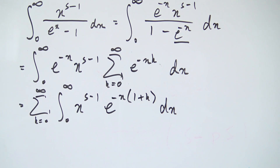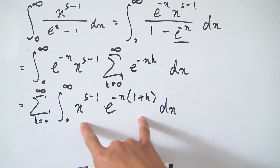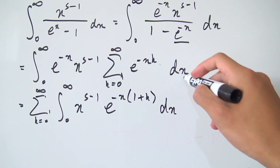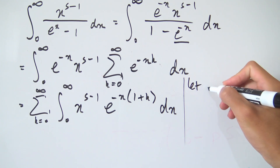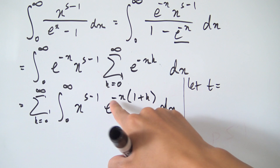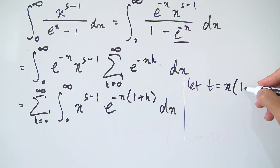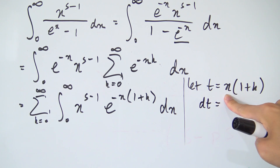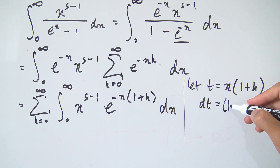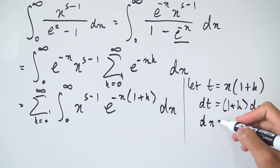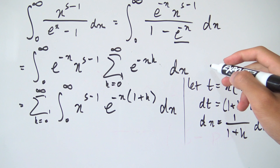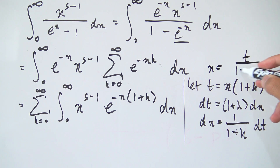If you know integral representations of specific functions, this looks like the gamma function, except we have this x times 1 plus k part that's complicating things. So we introduce a substitution: let t equal x times 1 plus k. Differentiating both sides gives dt equals 1 plus k times dx, so dx equals 1 over 1 plus k times dt. We can also write x equals t over 1 plus k.